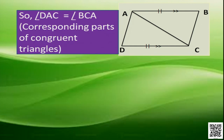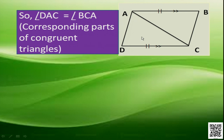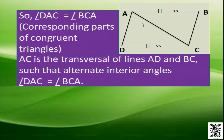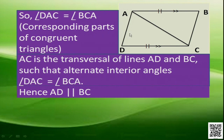As the two triangles are congruent, angle DAC is equal to angle BCA because they are corresponding parts of congruent triangles. Now if we consider AC as the transversal and AD and BC as the lines, then DAC and BCA are alternate interior angles. Since they are equal, lines AD and BC are parallel. So we prove that AD is parallel to BC.